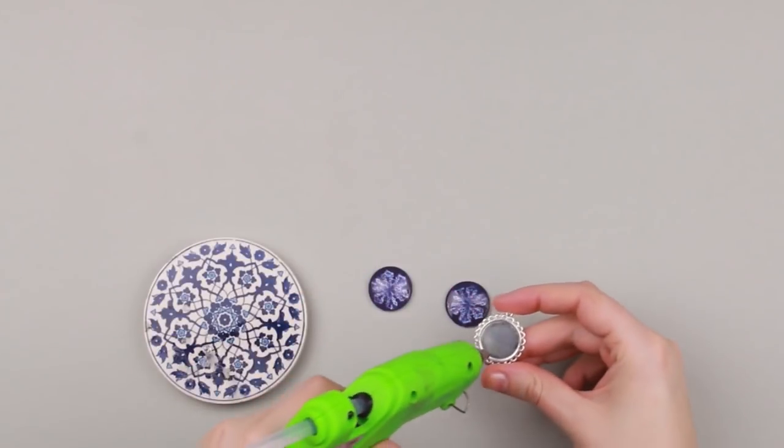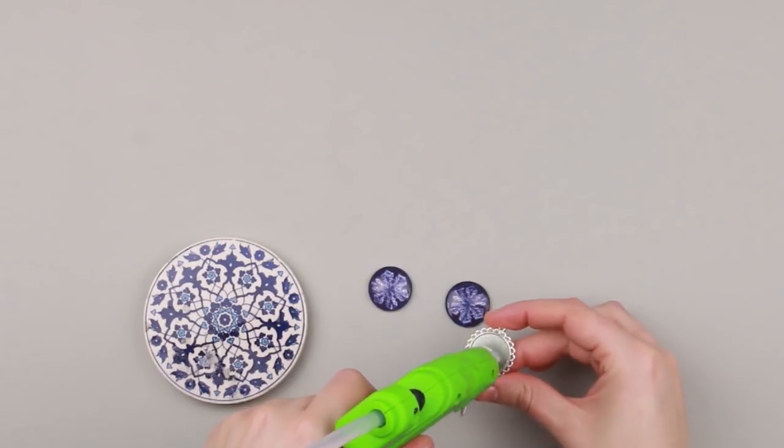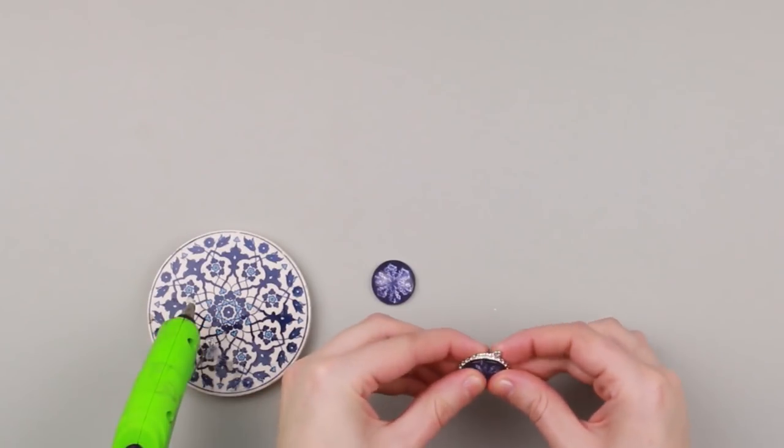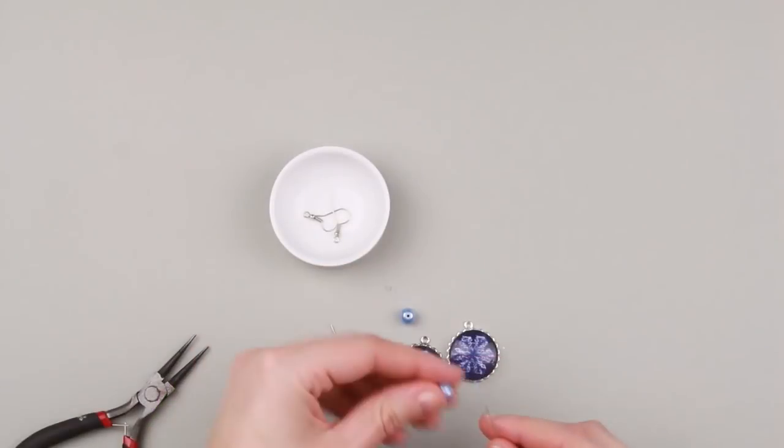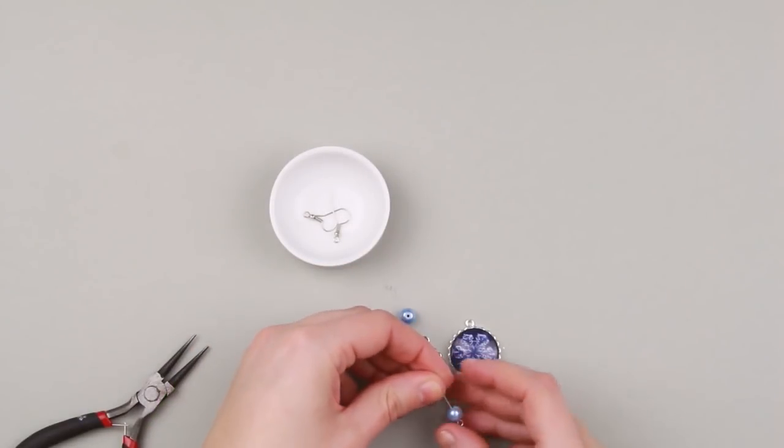Take an earring back, add glue, and attach a lens. Do the same with the other earring. Thread beads on the earring pins.